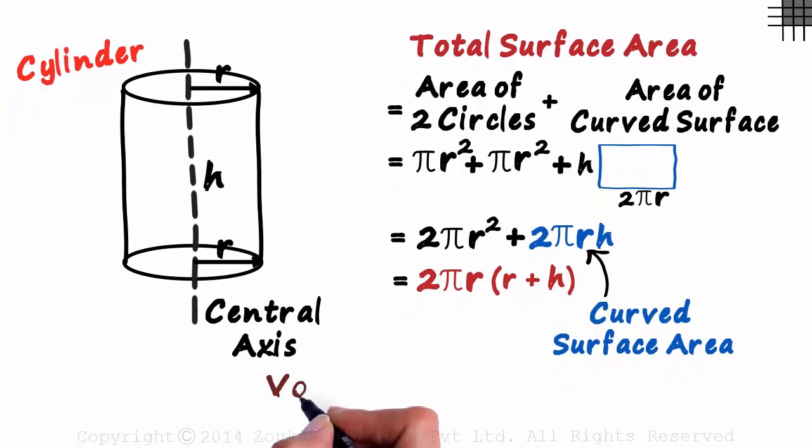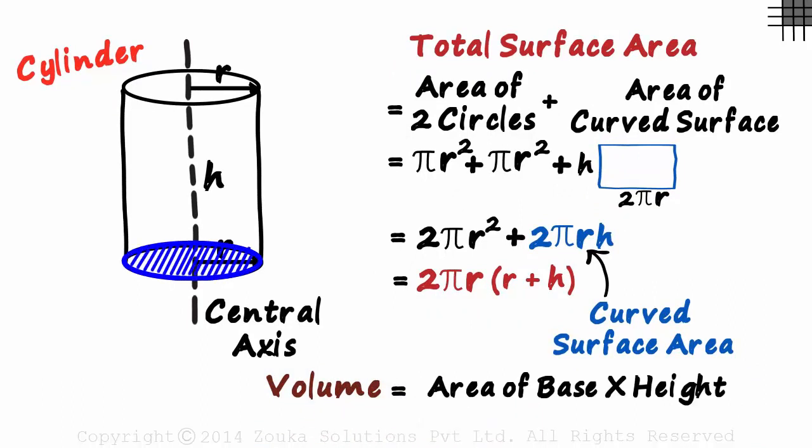And finally, we come to the volume of a cylinder. It equals the area of its base times its height. As the base is circular, its area will be πr². And its height is h. That's the volume of a cylinder. πr²h.